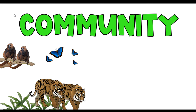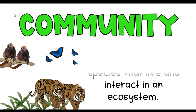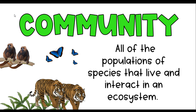The next level is a community. The community is different from a population in that now we are grouping all of the populations and species that live and interact in an ecosystem. If we're talking about the rainforest, for example, we're looking at all of the tigers, the butterflies, the monkeys, and the ferns. It's all the populations of plants and animals that live in this ecosystem — trees, grasses, mosses, and every other population that exists here.